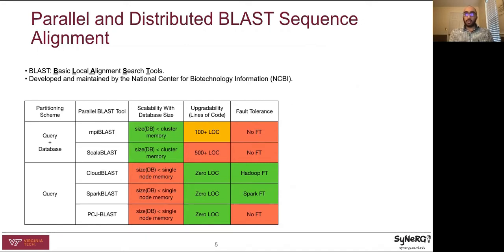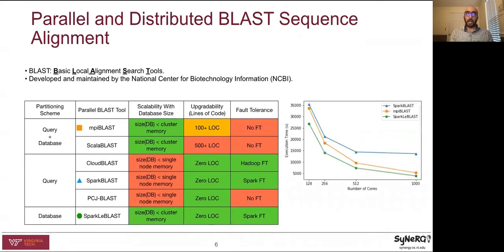To the best of our knowledge, existing solutions have attempted to optimize one or more of these design parameters, but not all three. Sparkle BLAST, our solution, optimizes all three parameters by implementing database partitioning for scalability, a Spark wrapper around unchanged NCBI BLAST code for upgradability, and using Spark fault tolerance. Sparkle BLAST outperforms two state-of-the-art parallel and distributed BLAST tools.